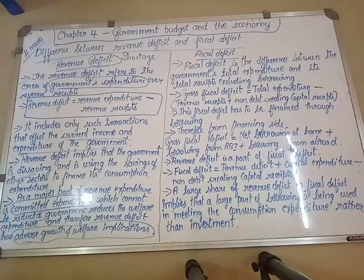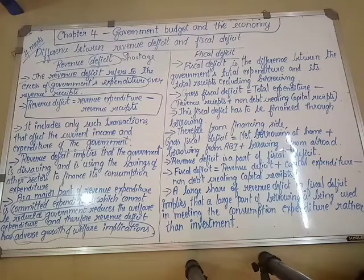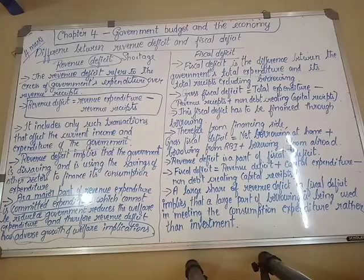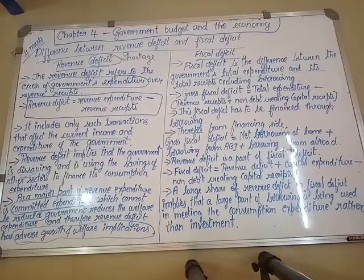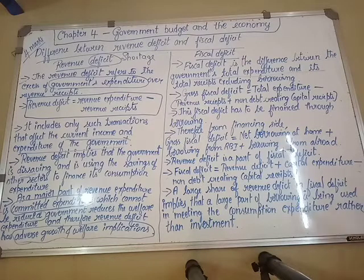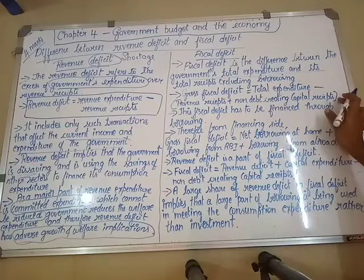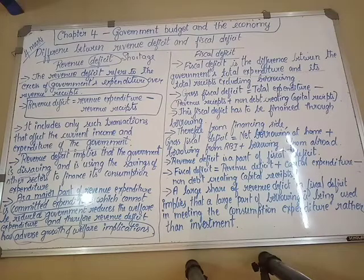Now we shall move on to fiscal deficit. Fiscal deficit is a broader, bigger term. Fiscal deficit is the difference between the government's total expenditure and its total receipts excluding borrowings. Gross fiscal deficit — how do we calculate? Total expenditure — and that includes revenue expenditure as well. So revenue deficit is a part of fiscal deficit. Total expenditure minus revenue receipts plus non-debt creating capital receipts gives us the gross fiscal deficit.